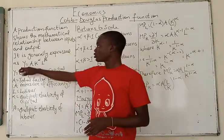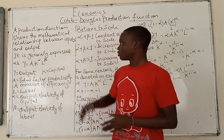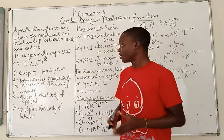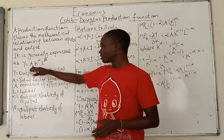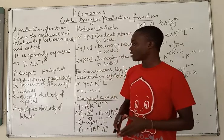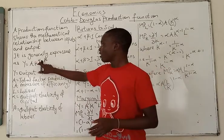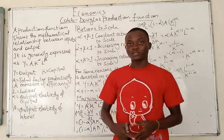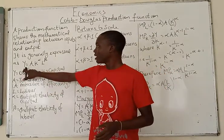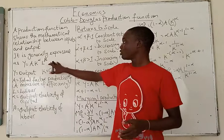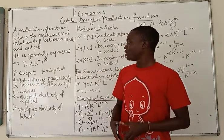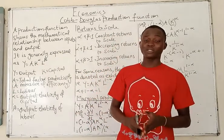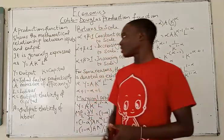That is, when output grows and we subtract the impact — we remove the impact of the growth in capital and labor from that output — whatever we have left represents our total factor of productivity, which is A. Now, output elasticity of capital, alpha, tells us what happens to output if capital changes by 1%. Similarly, beta, which is the output elasticity of labor, tells us what happens to Y when labor changes by 1% — labor might increase or decrease by 1%.